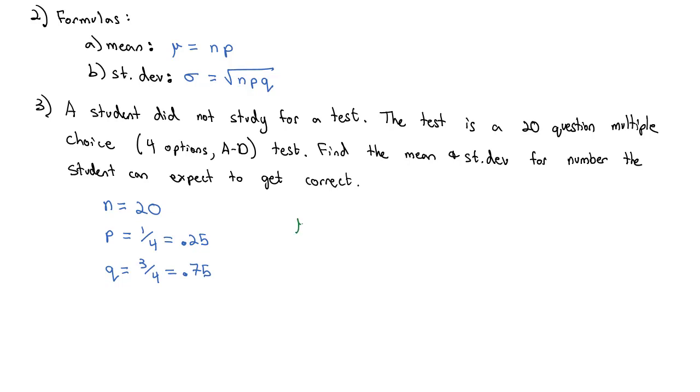So if we want to calculate the mean, the average, or expected number we get correct, it's the sample size times the probability of success. 20 times 0.25 equals 5. Students who haven't studied for this test would expect to get, on average, five questions correct.